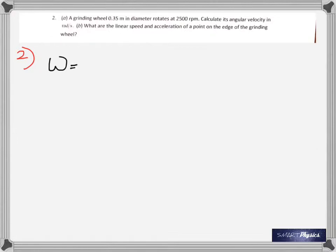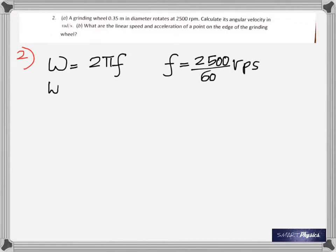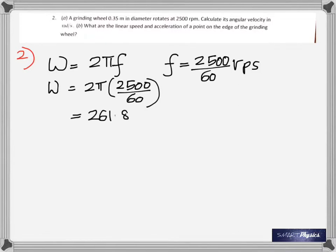Dividing by 60 gives you the frequency, and then angular velocity is 2π times the linear frequency. That's the formula: angular velocity equals 2π times the frequency. In this case, the frequency is 2,500 divided by 60, giving you rotations per second. Plug in that number and you will get the angular velocity — it's 261.8 radians per second.